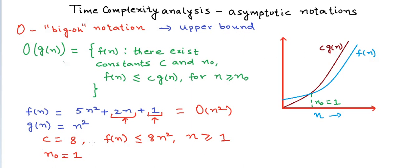One more important thing: the constants c and n₀ can be chosen differently. For the same functions f(n) and g(n), we can choose different c and n₀ and the conditions may still be valid. Let us now define another asymptotic notation.